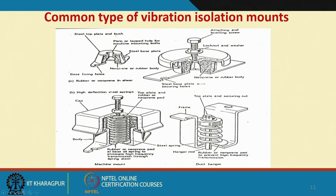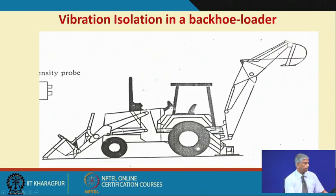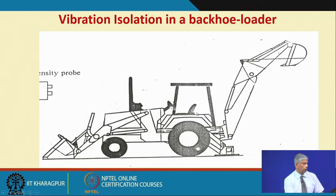Common vibration isolation products include neoprene or springs, which have inherent damping already built in apart from stiffness. One example is a backhoe loader — the cabin is rigidly mounted on the frame, and the machine is subjected to large forces from off-highway operations. So the driver's seat has to be isolated, and this is how vibration transmissibility is measured, with transducers on the frame and transducers on the cabin supported by isolators.